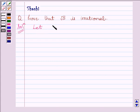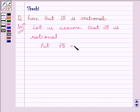Let us assume root 5 is rational. Now, put root 5 equal to A upon B, where A and B are coprime such that B is not equal to 0.